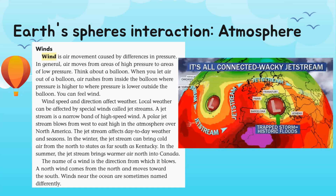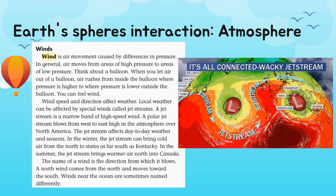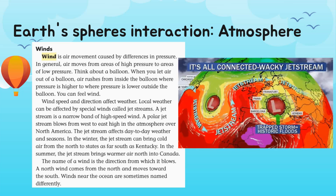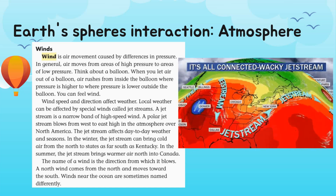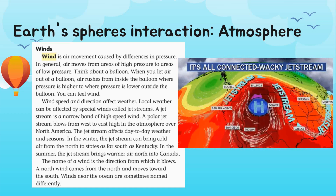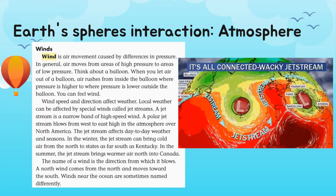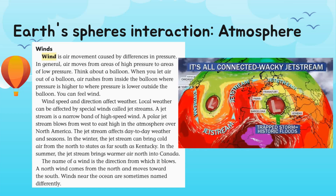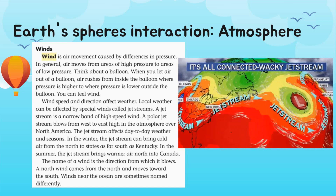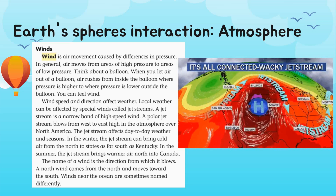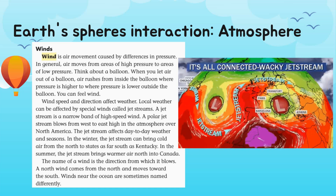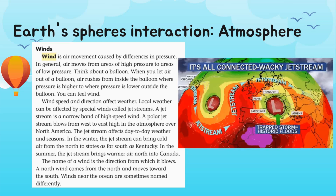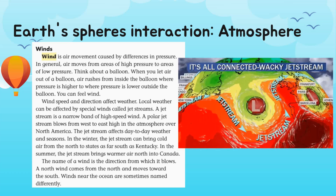Wind speed and direction affect weather. Local weather can be affected by special winds called jet streams. A jet stream is a narrow band of high-speed wind. A polar jet stream blows from west to east, high in the atmosphere over North America, affecting day-to-day weather and seasons. In winter it can bring cold air as far south as Kentucky; in summer it brings warmer air north into Canada. The name of a wind indicates the direction from which it flows — a north wind comes from the north and moves toward the south.